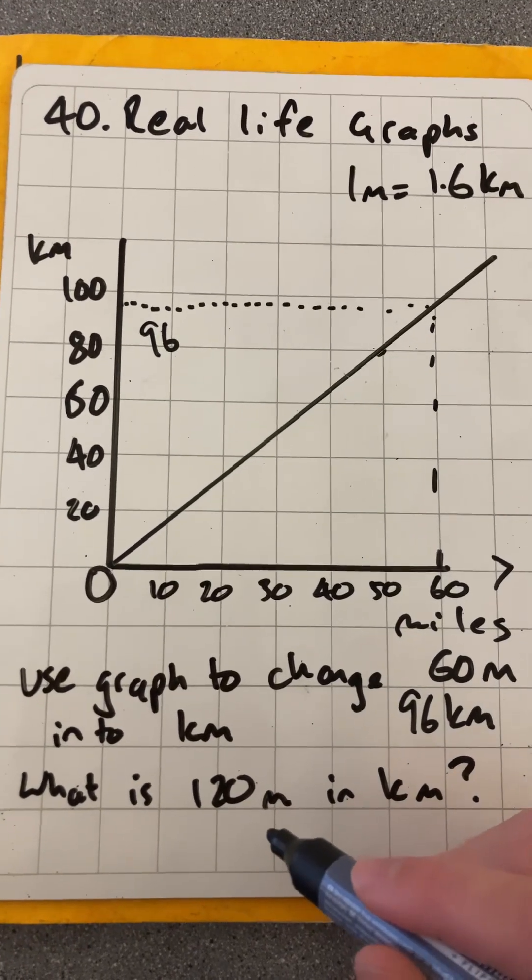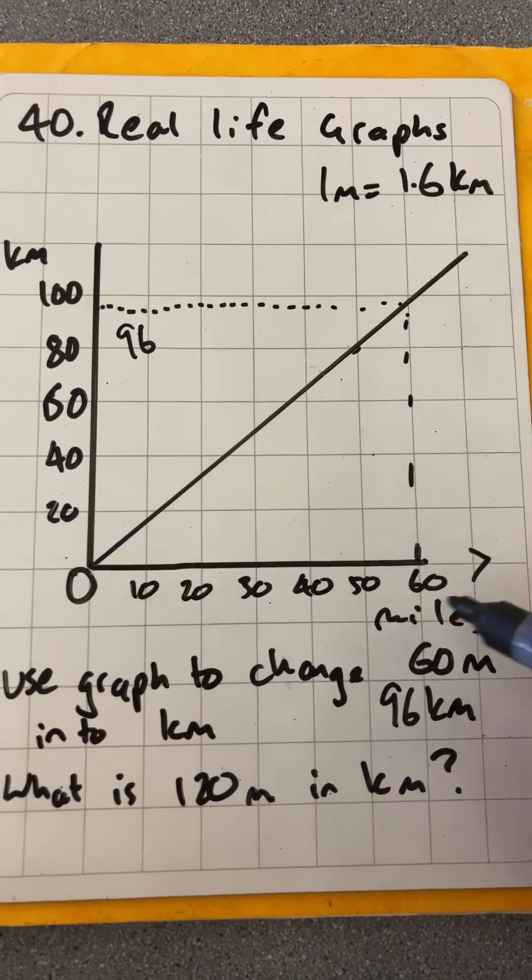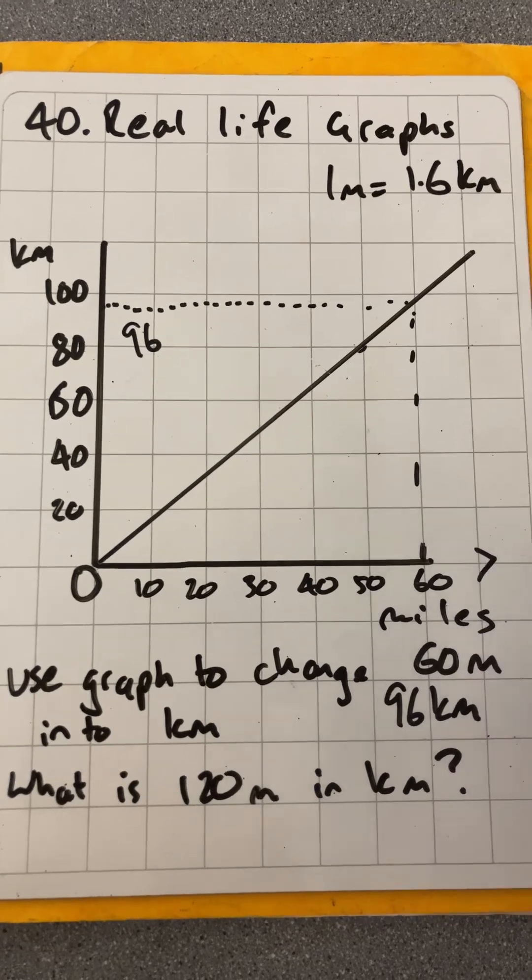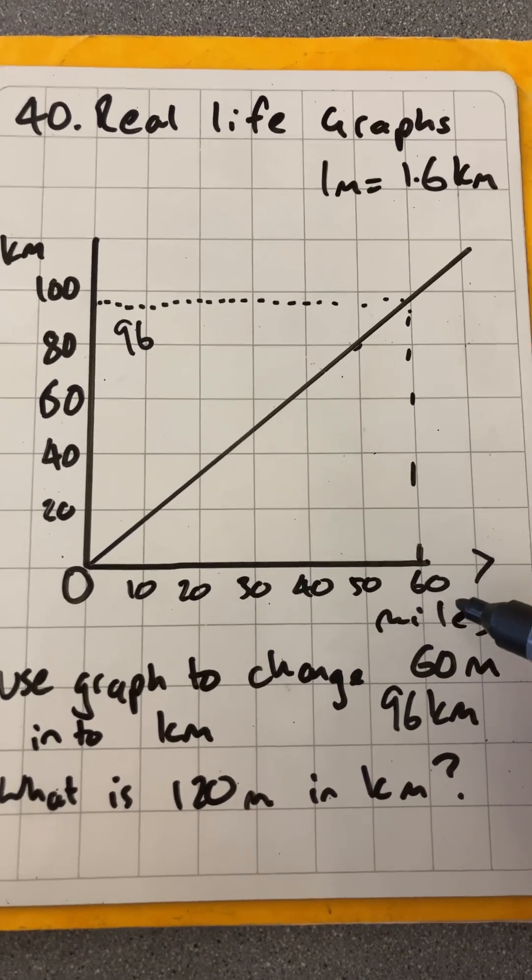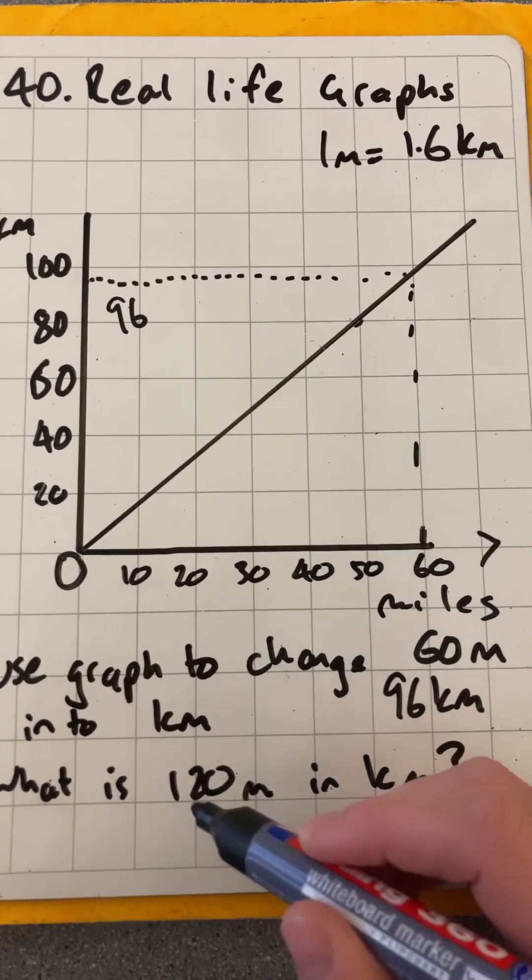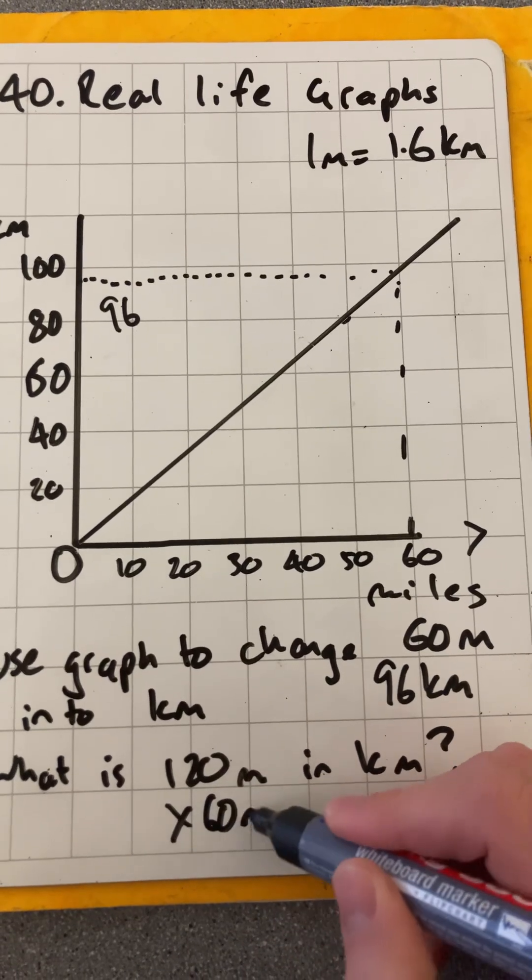Then it says, what is 120 miles in kilometers? Obviously, this graph does not go that far. We only go up to 60, but we should be able to see that I'm now asking for twice 60 miles.